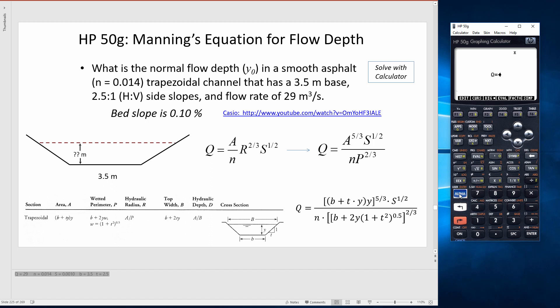So B, alpha B plus T times Y. And now I highlight all of that because I want to multiply it by another Y. I'm going to highlight all that because I'm taking it to the power of 5 thirds. And I'm going to highlight all that because I'm multiplying it by the slope to the power of 0.5. My numerator looks good.